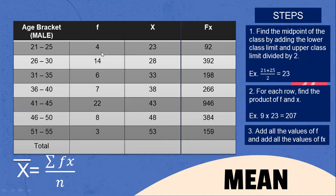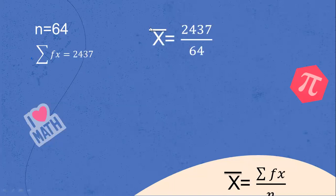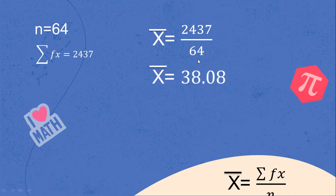Now add all the values of F and all the values of FX. Adding the frequencies: 4 plus 14 plus 6 plus 7 plus 22 plus 8 plus 3, that is 64 — so there are 64 male respondents. Then add the FX values: 92 plus 392 plus 198 plus 266 plus 946 plus 384 plus 159, the answer is 2,437. So mean equals 2,437 divided by 64, and the answer is 38.08. The average age of the male respondents is 38.08.